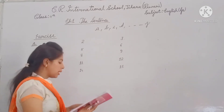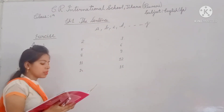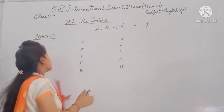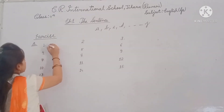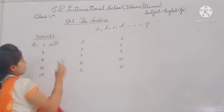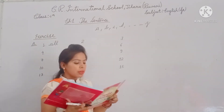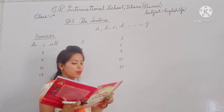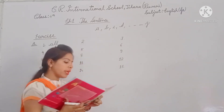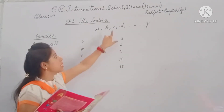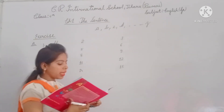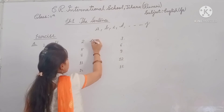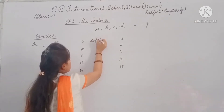So the first word — what do we write? 'All.' All starts with A, so at number 1 we write 'All.' Next, B — do we have a word starting with B? No. So we move to C. C has a word — 'Capital.' So at number 2 we write 'Capital.'